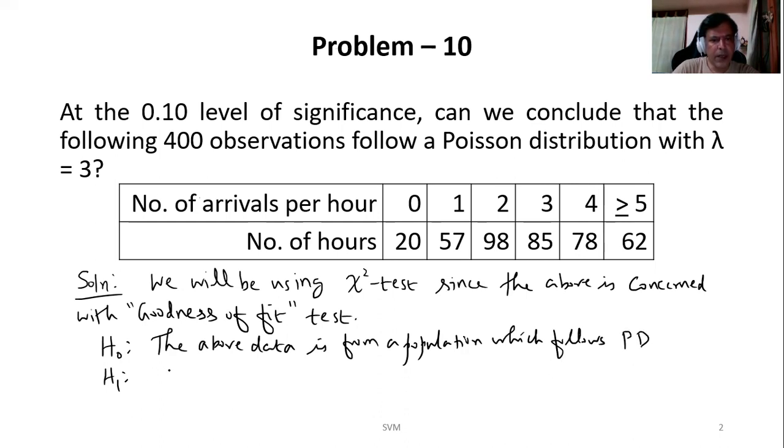Alternative will be exactly opposite: the above data is not from a population which follows Poisson distribution. So that will be your null and alternative hypothesis. Let's continue with this.